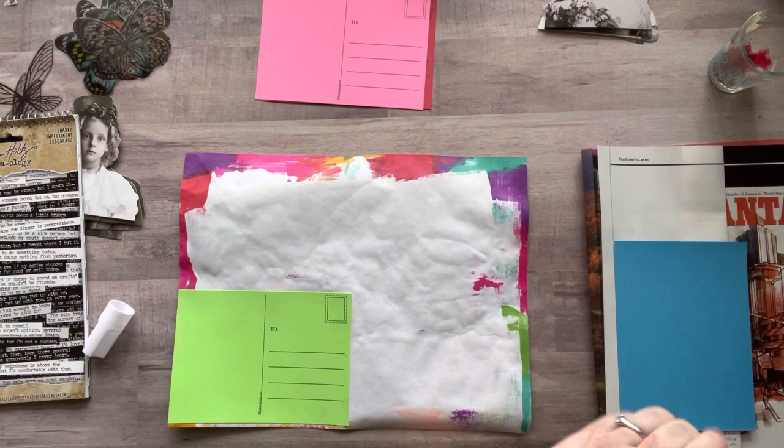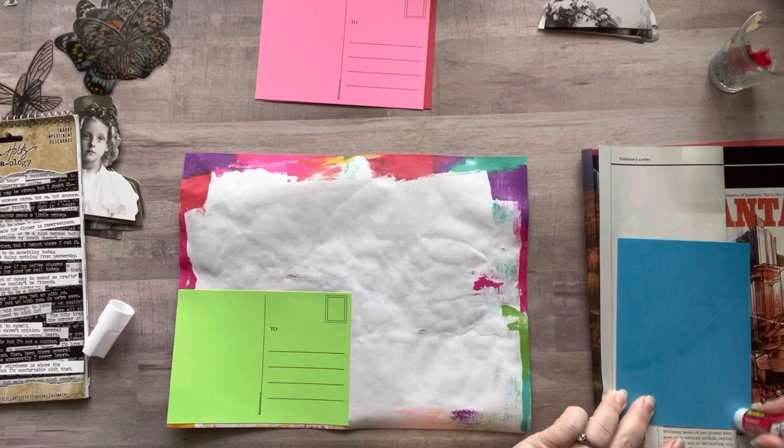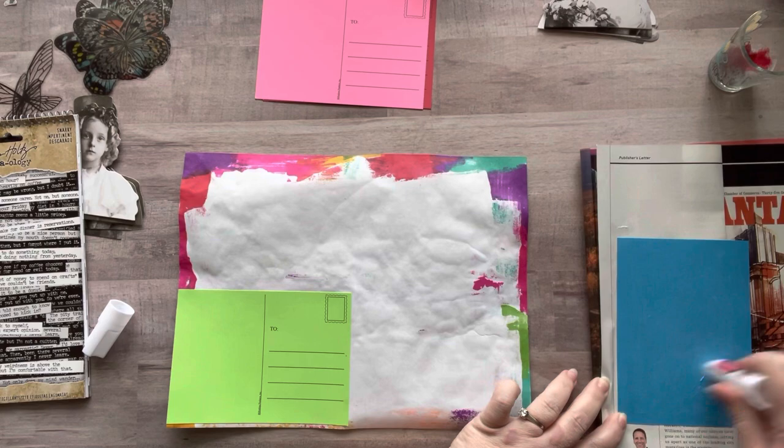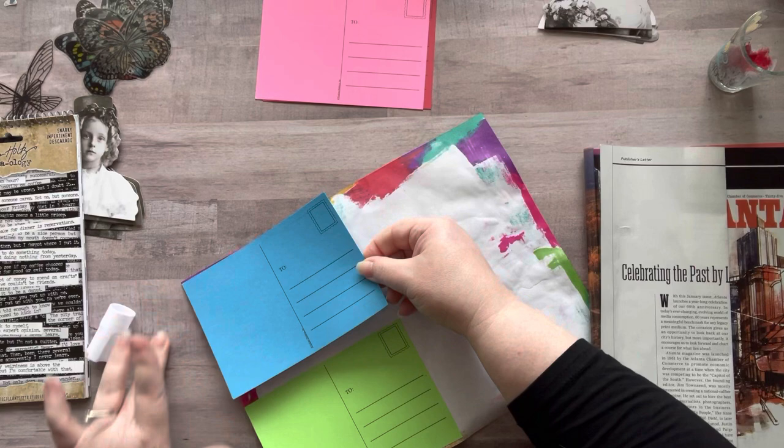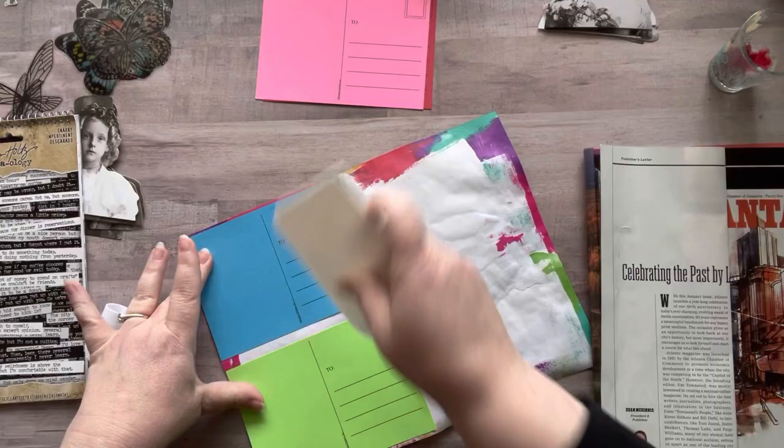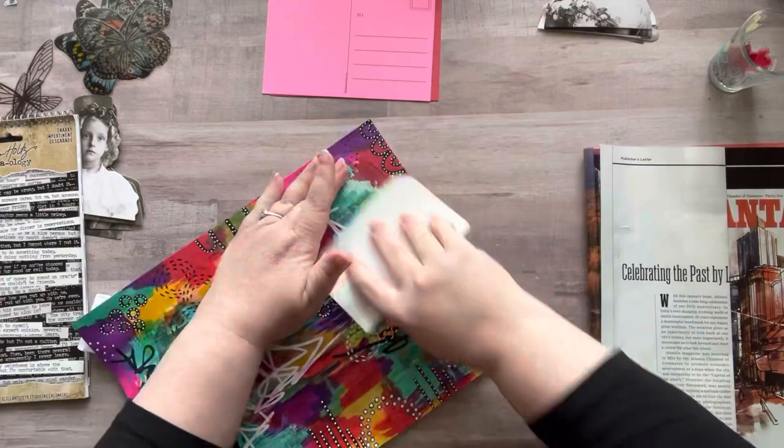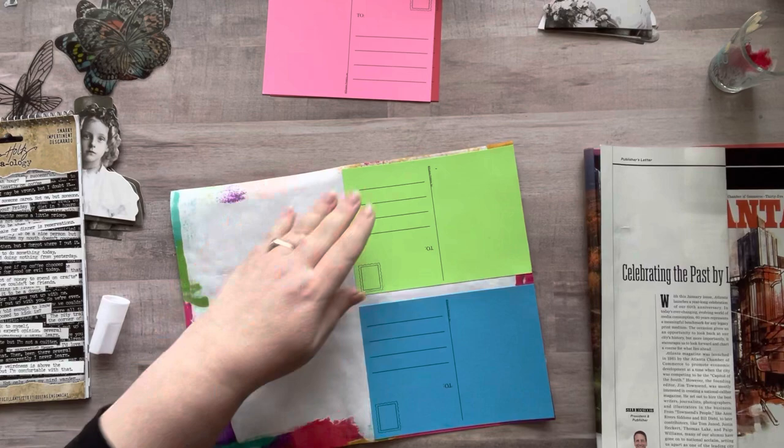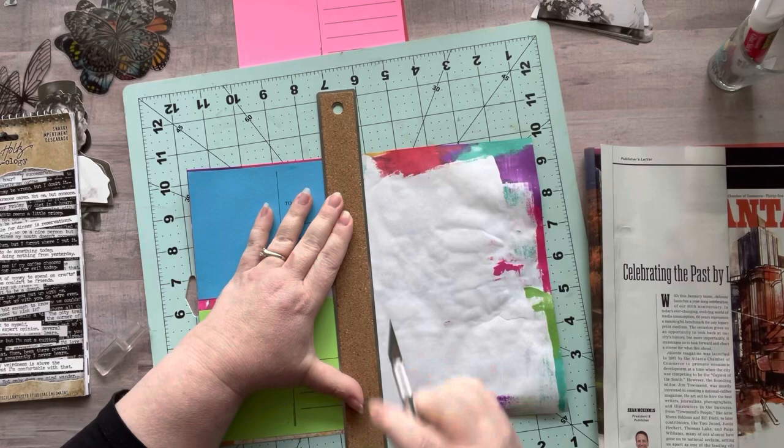They are five and a half inches by four inches, and typically a postcard is six inches by four. This is still an appropriate size for a postcard and it's really cool because they came in really bright colors and then the back is already set up with a spot for the stamp and to put the address. So what I'm doing here is just gluing all four of these to the back of my painty papers and then I will cut them apart.